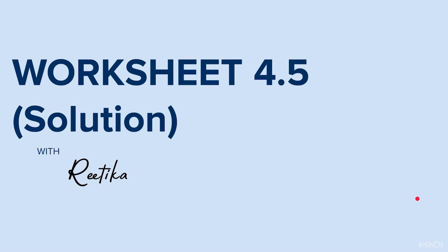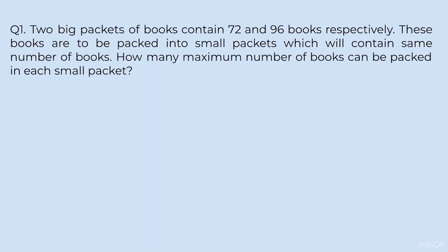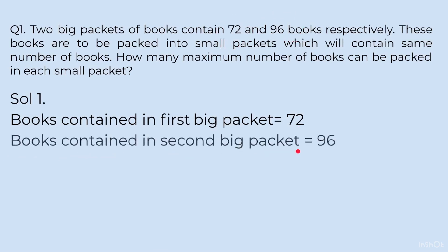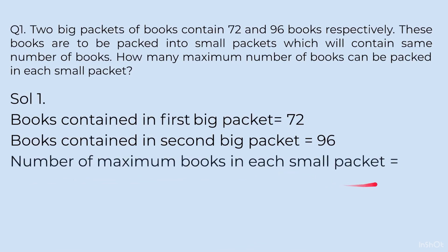Now pause the video, solve all the questions, and once you have finished, unpause to see the solutions to Worksheet 4.5. Question 1 solution: Two big packets contain 72 and 96 books. Books are to be packed into small packets with the same number of books. How many maximum books can be packed in each small packet? Given: books in first big packet = 72, books in second big packet = 96. We need the maximum number of books per small packet, so we find the HCF of 72 and 96.